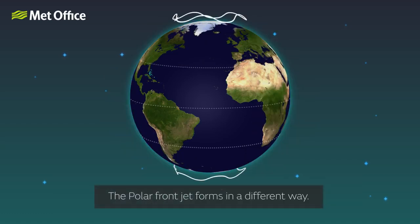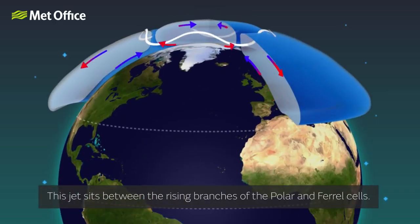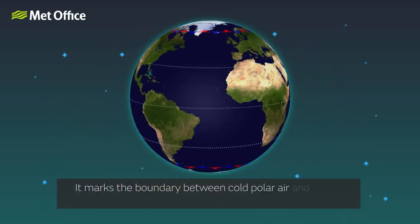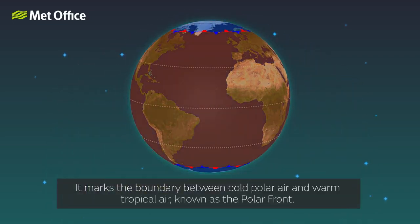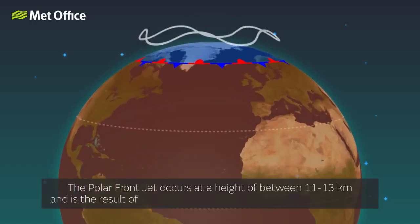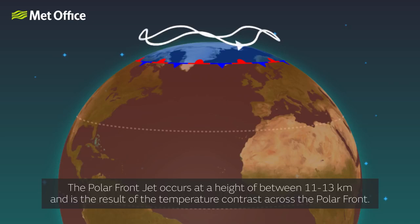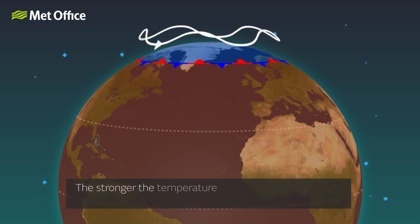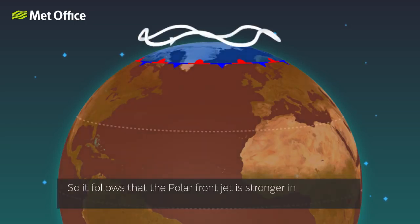The polar front jet forms in a different way. This jet sits between the rising branches of the polar and Ferrell cells, and marks the boundary between cold polar air and warm tropical air, known as the polar front. The polar front jet occurs at a height of 11 to 13 kilometres and is primarily the result of the temperature contrast across the polar front. The stronger the temperature contrast across the front, the stronger the jet. It follows that the polar front jet is stronger in winter than in summer.